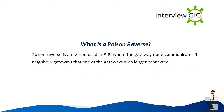What is a Poison Reverse? Poison Reverse is a method used in RIP where the gateway node communicates to its neighbor gateways that one of the gateways is no longer connected.